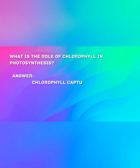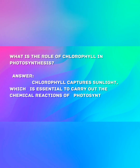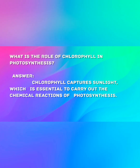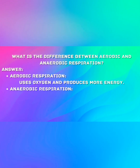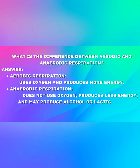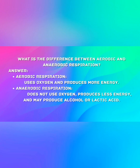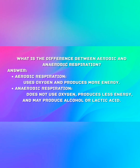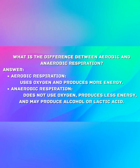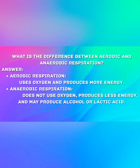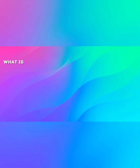What is the role of chlorophyll in photosynthesis? Chlorophyll captures sunlight, which is essential to carry out the chemical reactions of photosynthesis. What is the difference between aerobic and anaerobic respiration? Aerobic respiration uses oxygen and produces more energy. Anaerobic respiration does not use oxygen, produces less energy, and may produce alcohol or lactic acid.